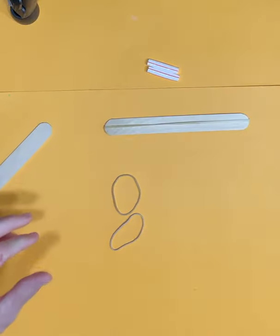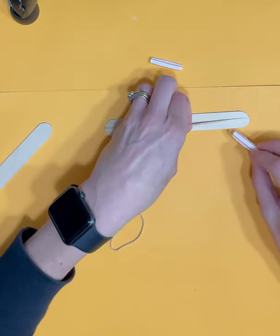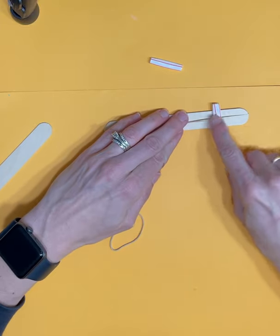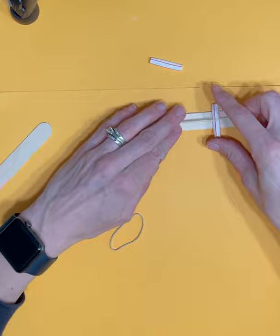Then the next thing we're going to do is take one of our straws and we're going to put it underneath the rubber band. About a third of the way across, we're going to put the rubber band on top of it so it's holding it in place.